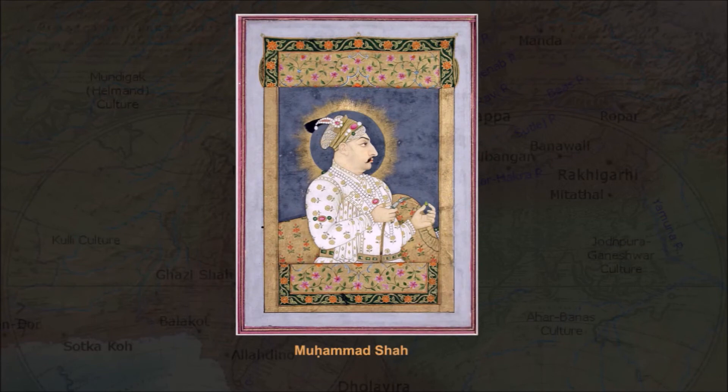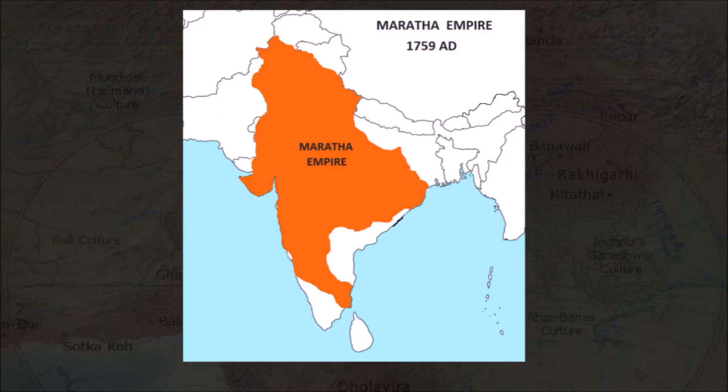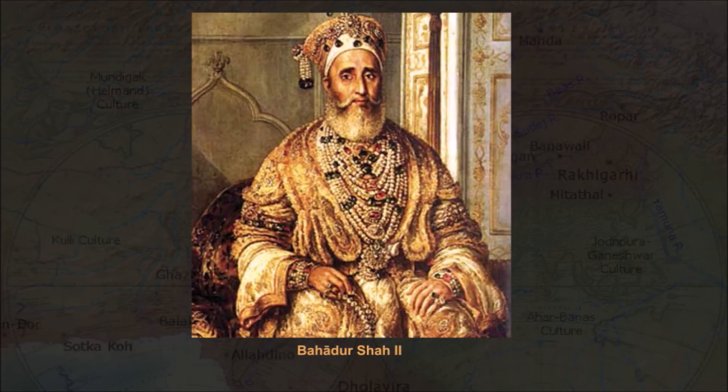During the reign of Muhammad Shah, 1719–48, the empire began to decline, accelerated by warfare and rivalries. After the death of Muhammad Shah in 1748, the Marathas attacked and ruled almost all of northern India. Mughal rule was reduced to only a small area around Delhi, which passed under Maratha control in 1785 and British control in 1803. The last Mughal, Bahadur Shah II, who reigned 1837–57, was exiled to Burma by the British.